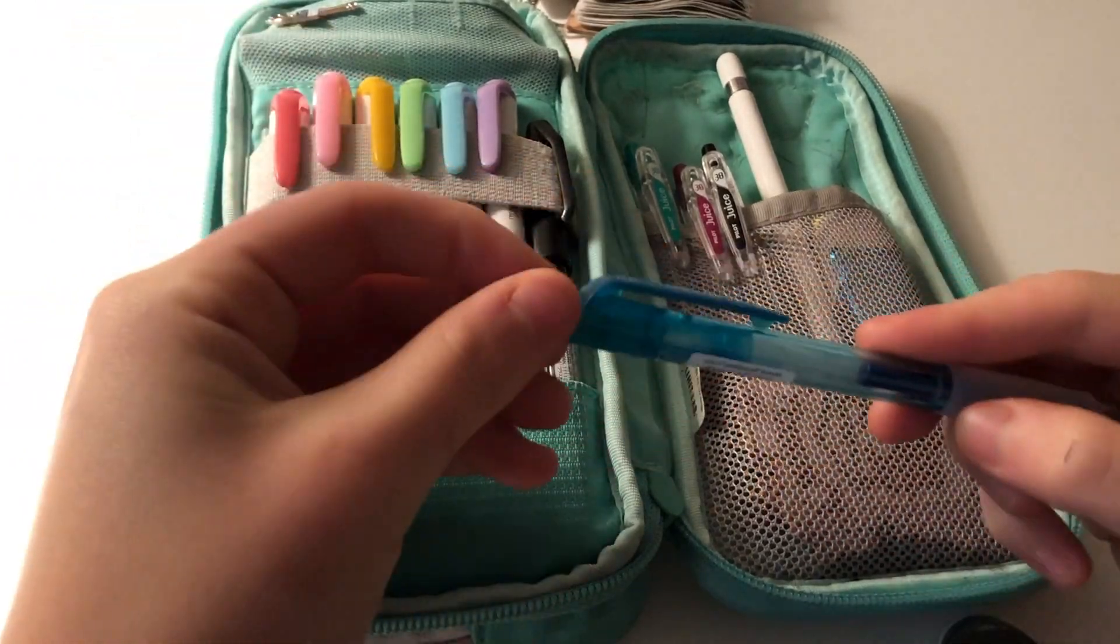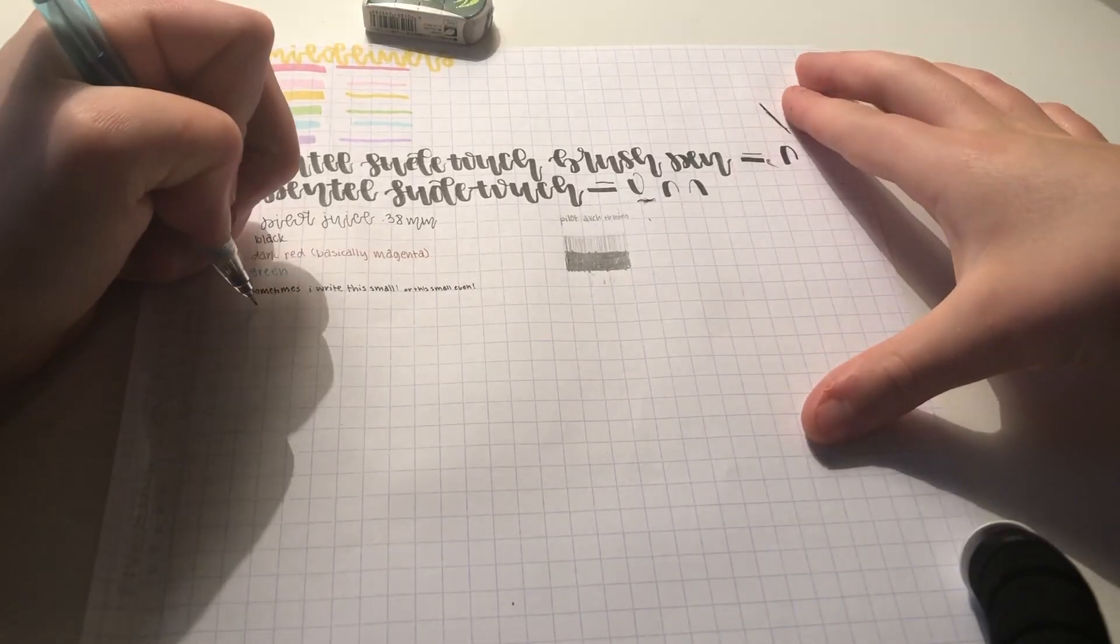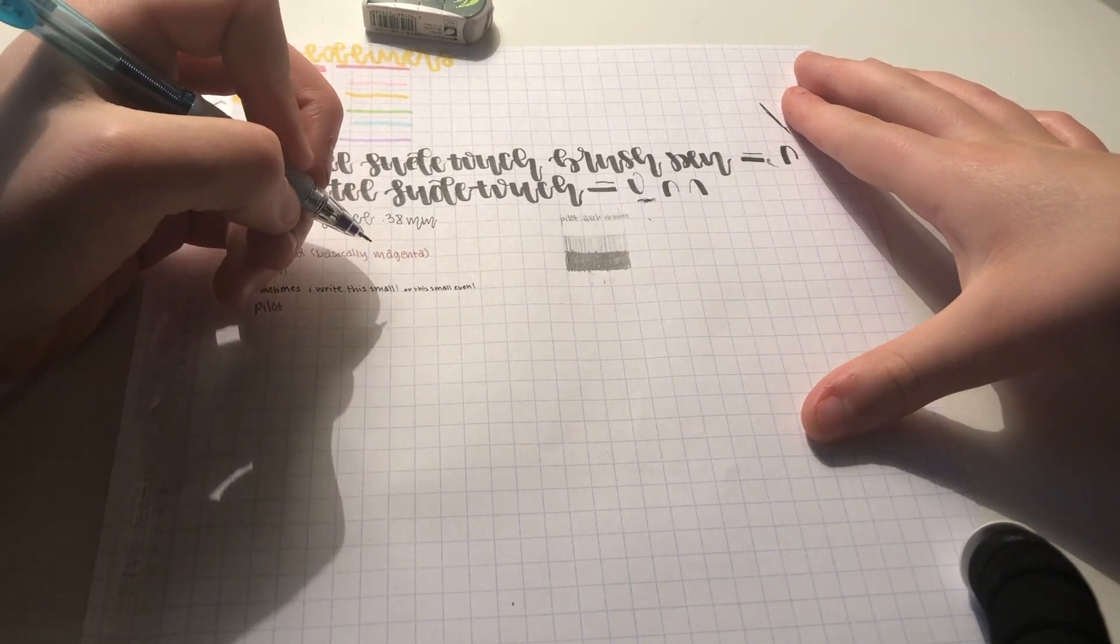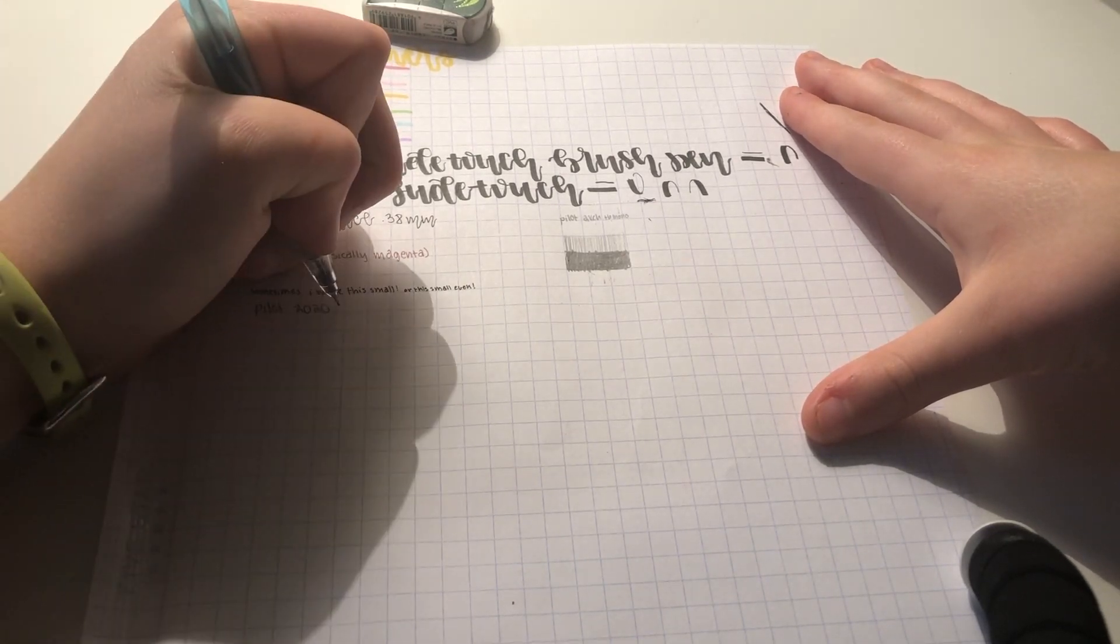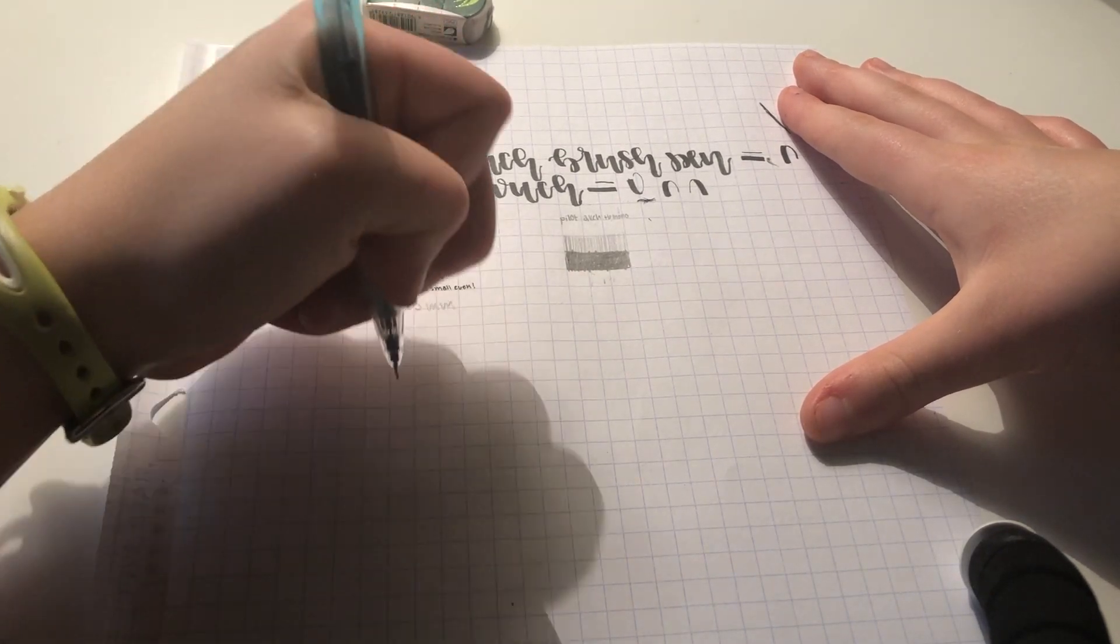Next is my shaker pencil, the Pilot Supergrip 2020. I love it because it's a little bit thicker than my pens so I can write faster with it and it won't get scratchy. I also like that the lead doesn't break and I can shake to extend it rather than pushing.